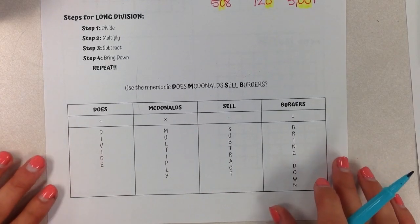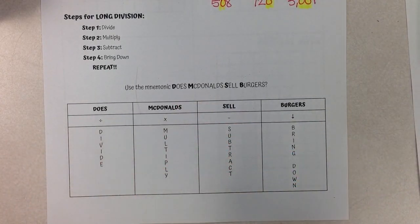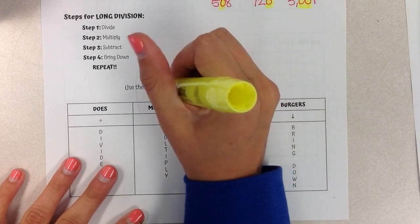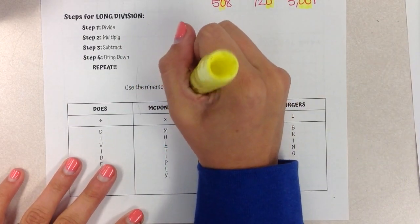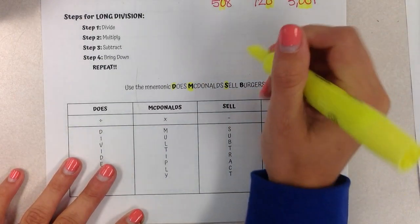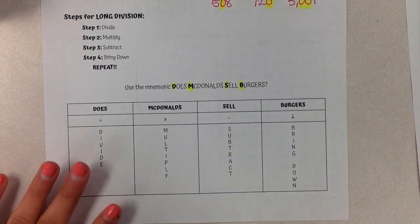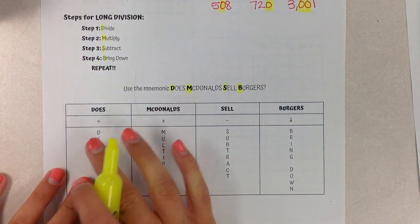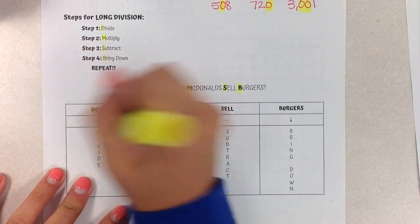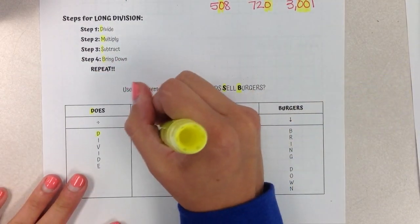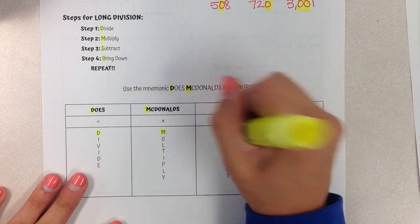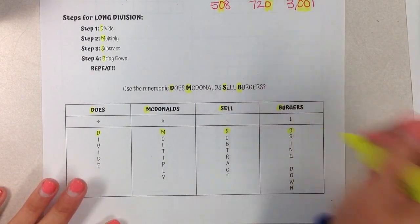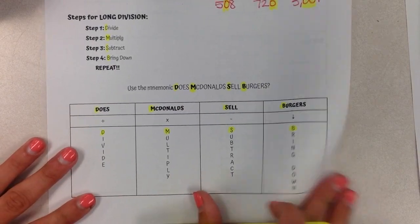So let's look at the steps. We're using a mnemonic device to help you remember: Does McDonald's Sell Burgers? The D for Does is step 1, the M for McDonald's is step 2, the S from Sell is step 3, and the B from Burgers is Bring Down. So I'm highlighting it here in our mnemonic device, and I'm going to highlight it in our steps. D stands for Divide, M stands for Multiply, S stands for Subtract, B stands for Bring Down. So let's look at this in action.